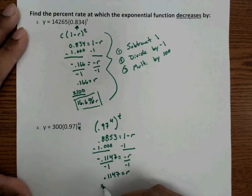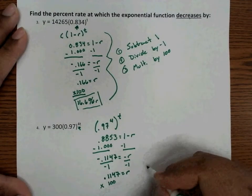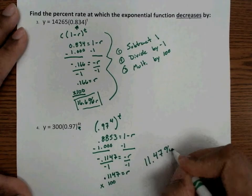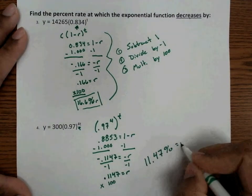And what's the last step we have to do? Well, that is correct. We multiply by 100. So when we multiply by 100, we get a percent rate of 11.47% would be our r.